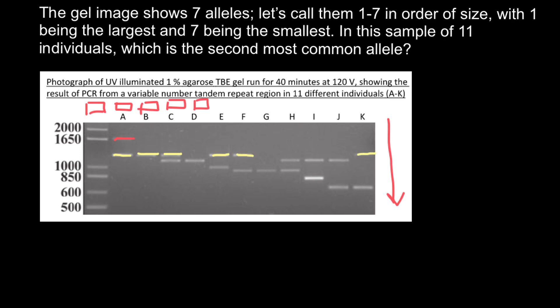And here we would have two alleles of the same size. This person also has an allele of this size, and person E, F, and K. So the next allele in size would be here. This would be the next allele by size.